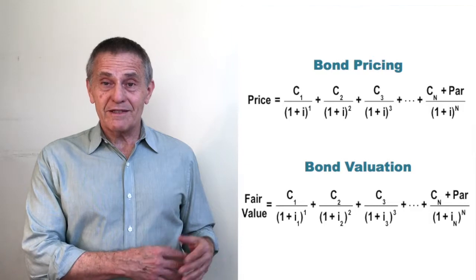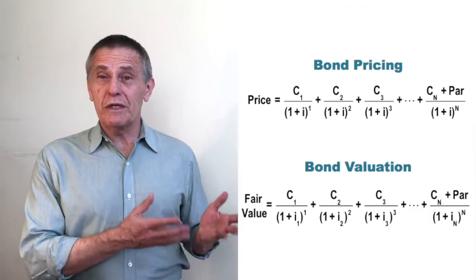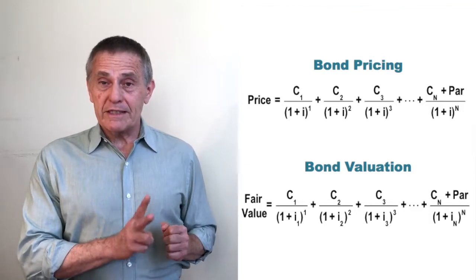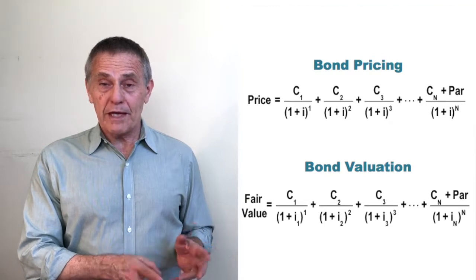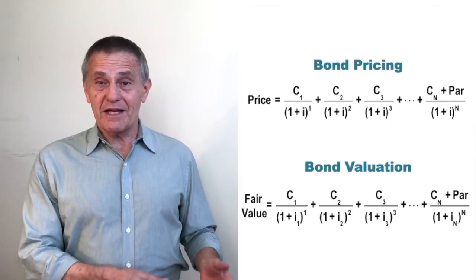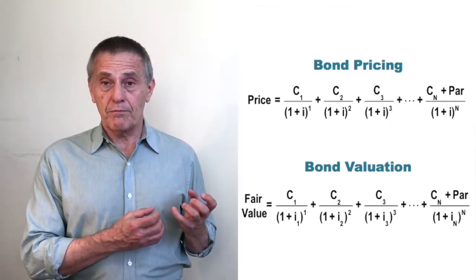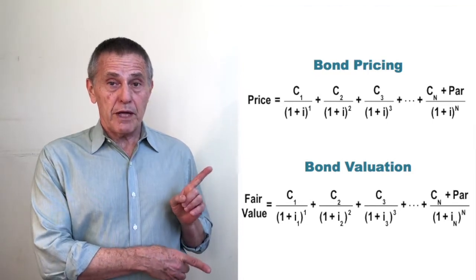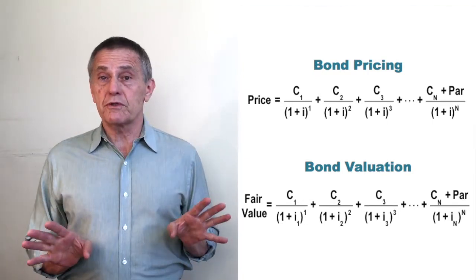While in both cases it's 1 plus i raised to the same exponents, you'll note the denominators, the i's in the lower formula are subscripted. C sub 1, the first coupon, is discounted by 1 plus i sub 1 to the first power. C sub 2, the second coupon, is discounted by 1 plus i sub 2 to the second power. In other words, the interest rates implied by the i's in the two formulas are different.